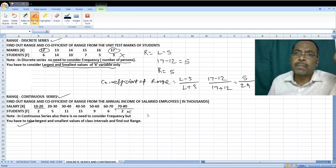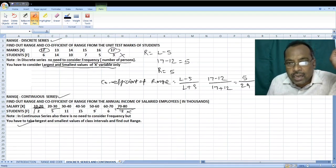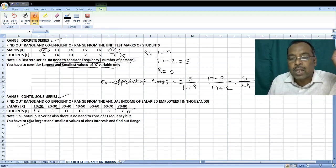Say, for example, this is the first Class Interval, second, third, fourth, fifth, sixth, and this is the last Class Interval. In the first Class Interval, you are going to take the Lowest Value. Lowest Value is 10. And in the last Class Interval, that is 70 to 80, the highest value is 80.